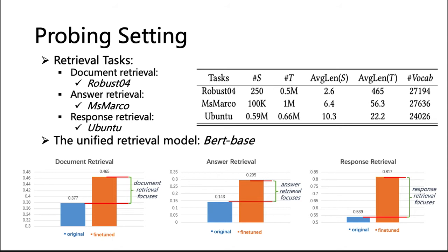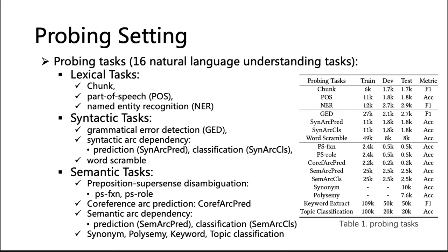In probing experiments, we take three representative datasets for each retrieval task: namely the Robust 2004 dataset, the MSMARCO passage retrieval dataset, and the UBAN2 conversational dataset. We take BERT-base as the unified retrieval model, since it has been proved effective on all three datasets and is easy to integrate with different probing tasks. We take 16 natural language understanding tasks as the probing tasks, categorized into three groups: lexical tasks, syntactic tasks, and semantic tasks. The table shows the detailed statistics of each probing task.